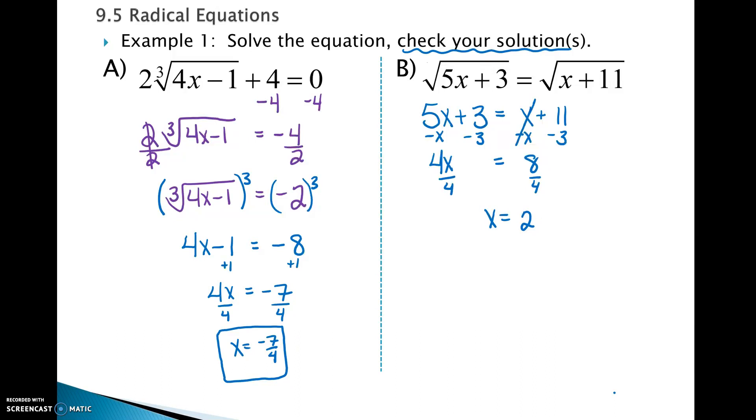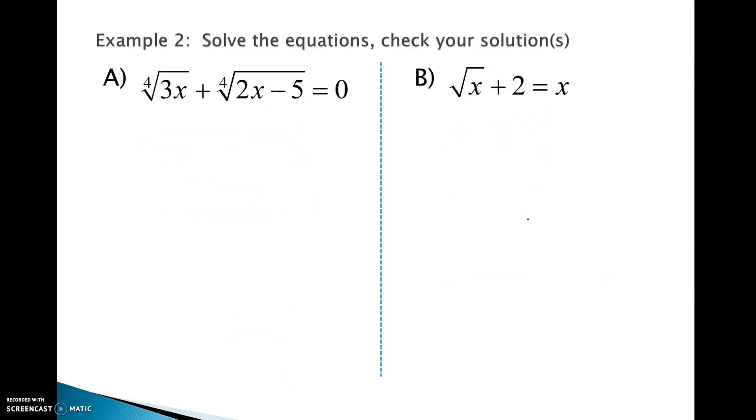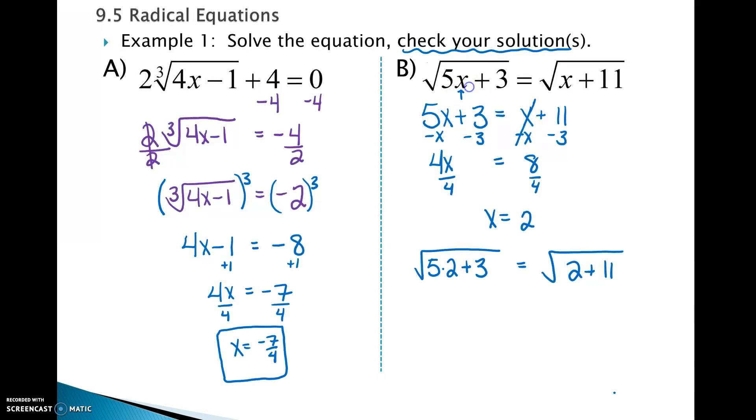We need to check this solution. Go back to the original. And a lot of this you can do using mental math. We are going to do 5 times 2 plus 3 and 2 plus 11. You're putting the 2 in place of the x on both sides. And you don't even have to fully do all of this. 5 times 2 is 10, 10 plus 3 is 13. So we have the square root of 13. 2 plus 11 is 13. Does the square root of 13 equal the square root of 13? Yes. You don't even have to get decimals there. You can just look at, yeah, that's exactly the same on both sides. So obviously that works. x equals 2 is our solution.